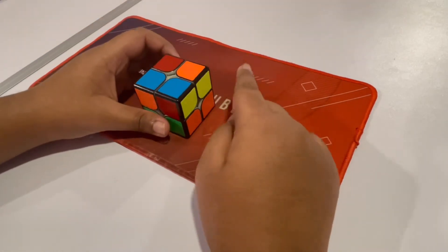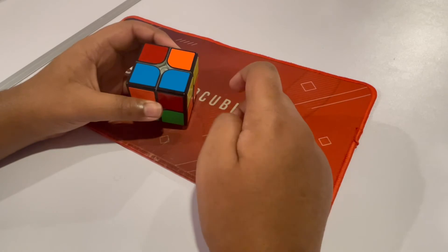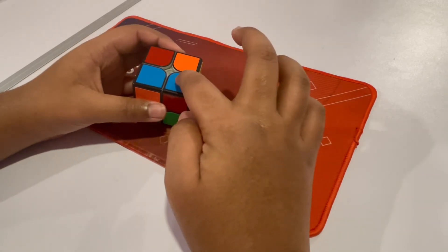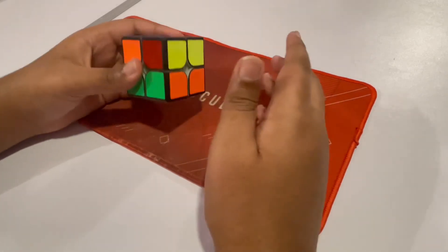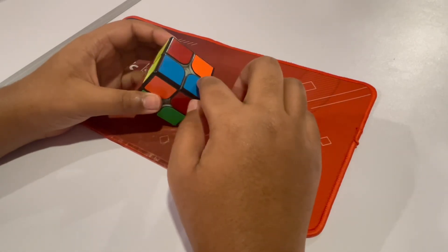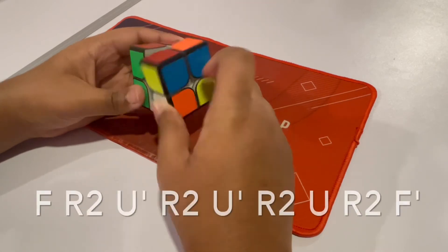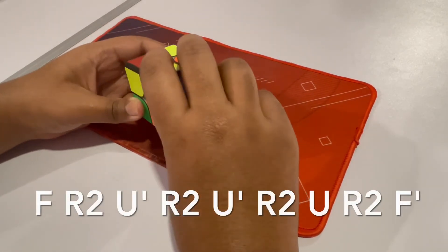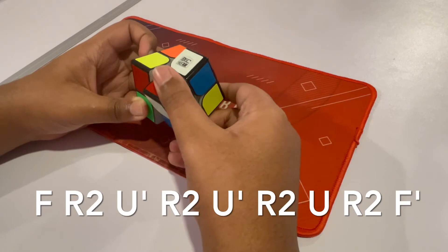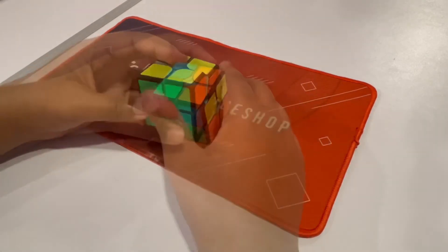Now for the next case, you have the yellow bars facing in opposite direction like before. But there is only one bar on top and they match, obviously. So you hold the bar like this. And then you do this. And as you can see, that solves it.